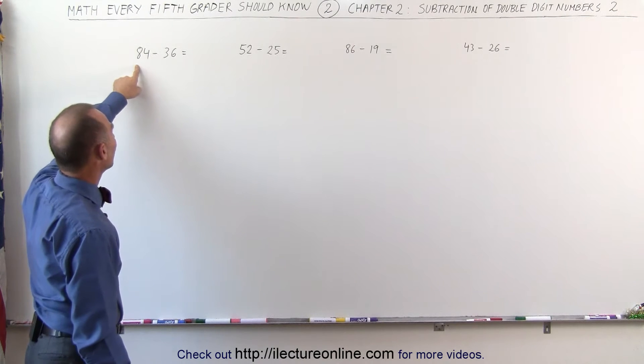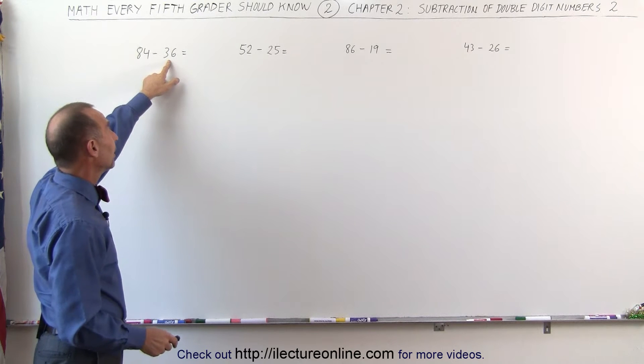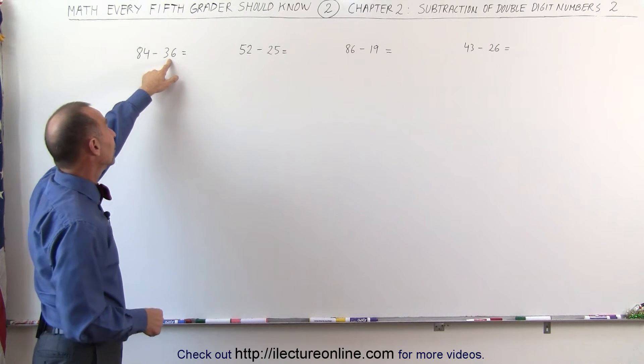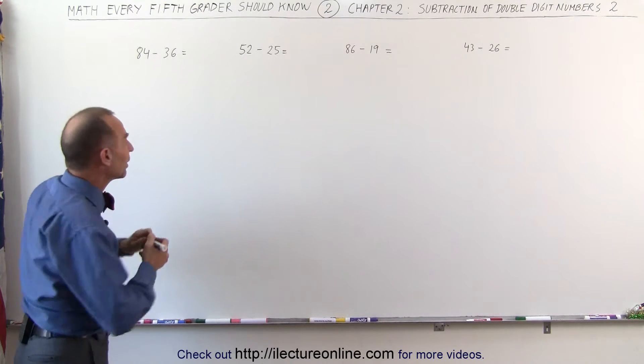Let's, for example, take 84 minus 36. What I like to do is I like to turn this into a 40. I need to add 4 more to this to turn this into 40. What I'm going to do instead, and I'll write it down so you can see what I'm trying to do here,